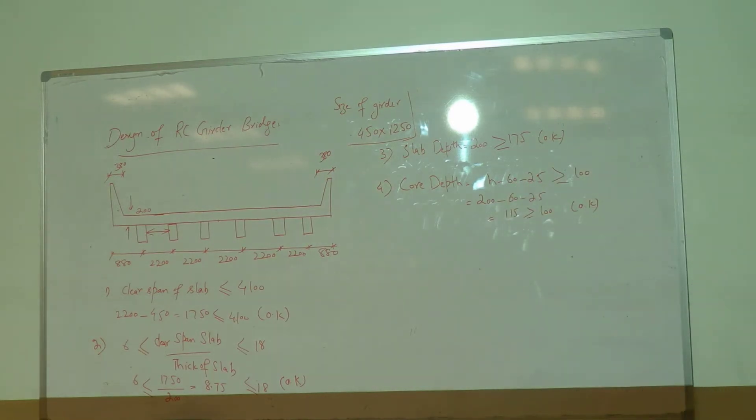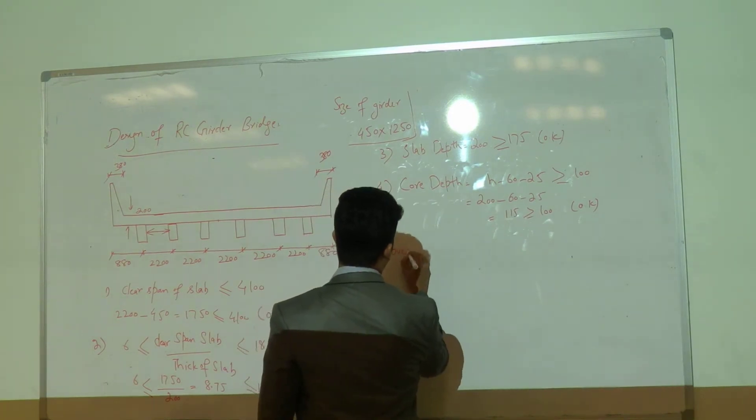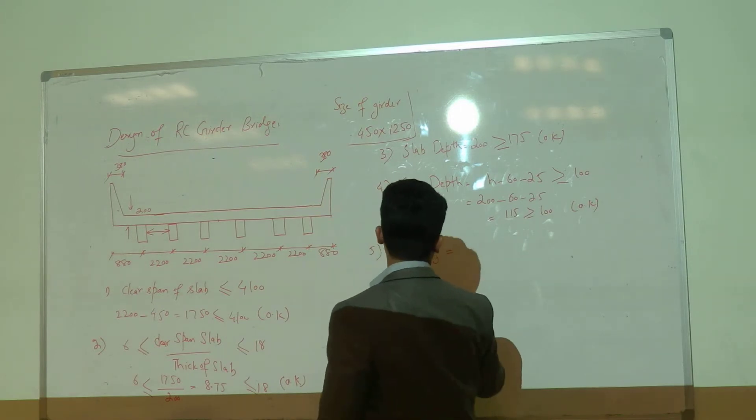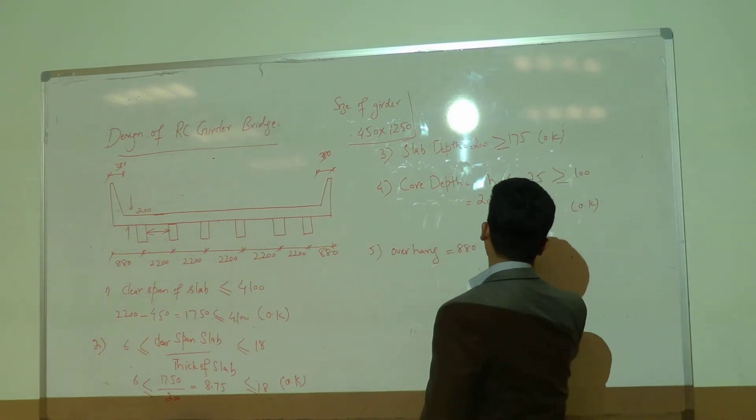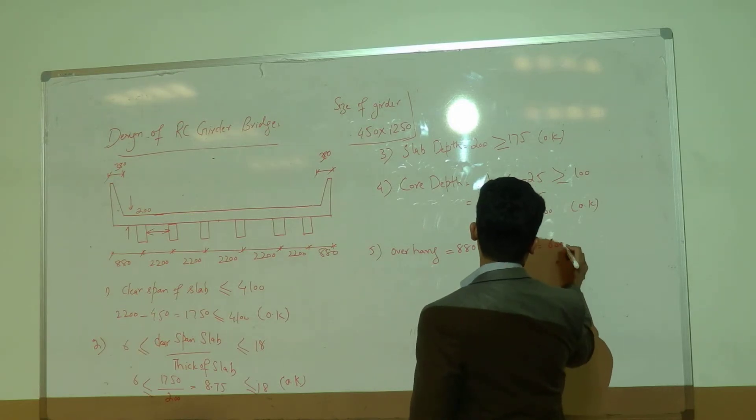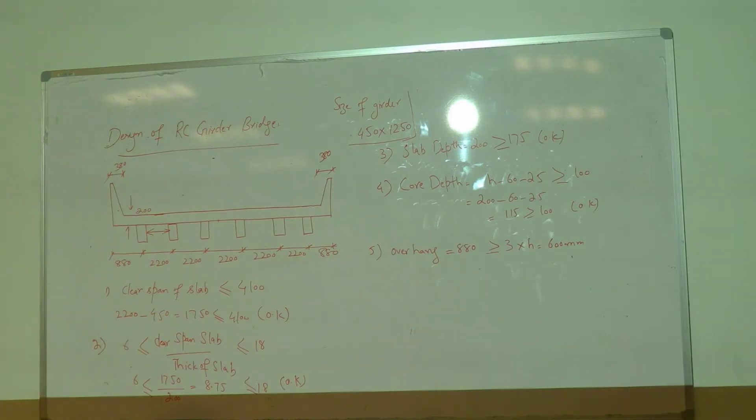Now the next condition - the overhang with barrier should be greater than or equal to 3h. How much is this overhang in our case? 800mm. It should be greater than or equal to 3h, where h is the thickness of slab.